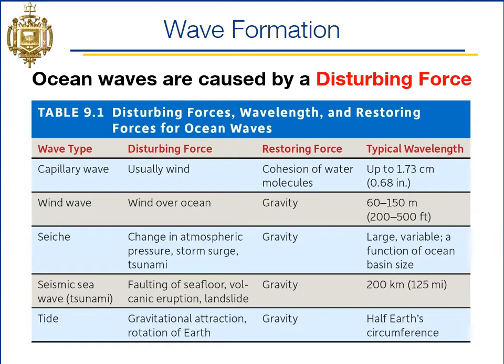Tsunamis are also very large. Sesh is something that happens in certain geographic areas — if you have a basin, you can set up this sesh type of wave. We're not going to talk much about that, but where we are going to focus our discussions is on wind waves. The vast majority of waves in the ocean are wind generated, and that's where we're going to focus.